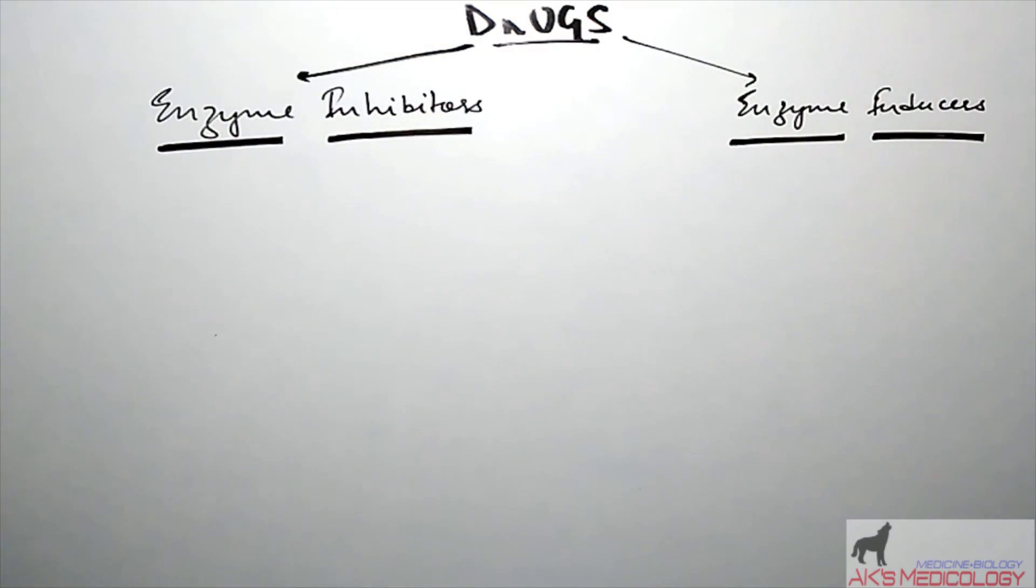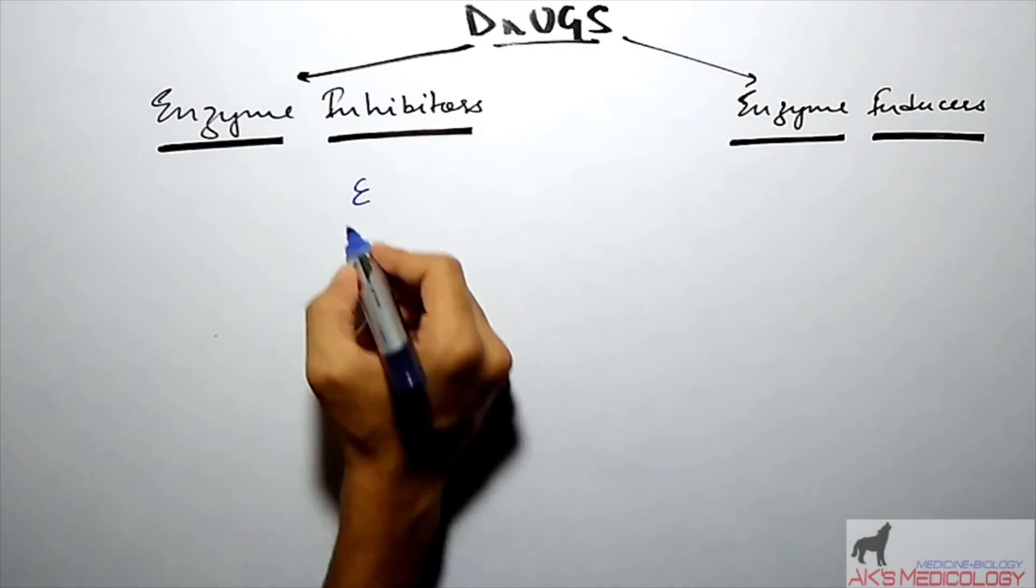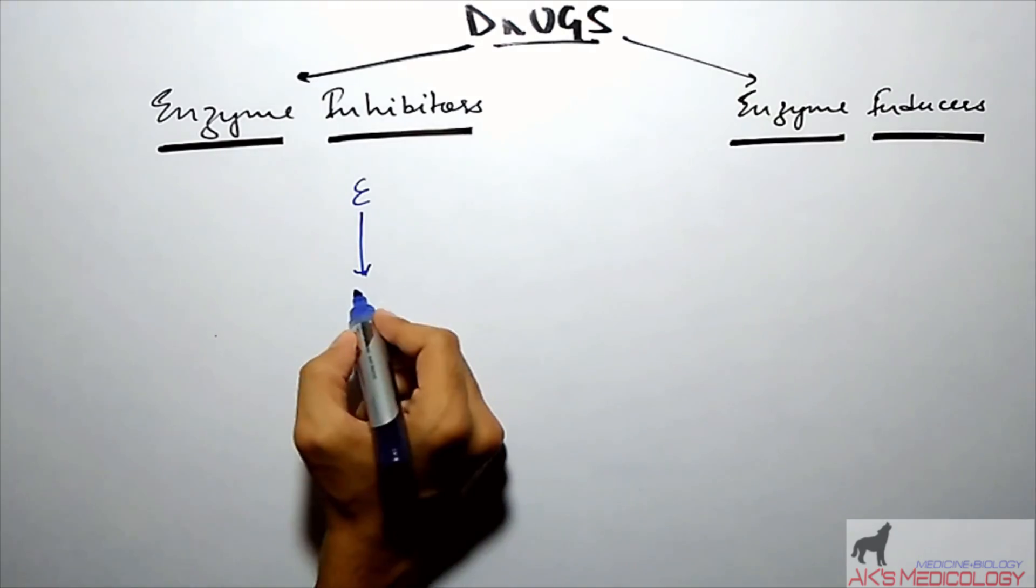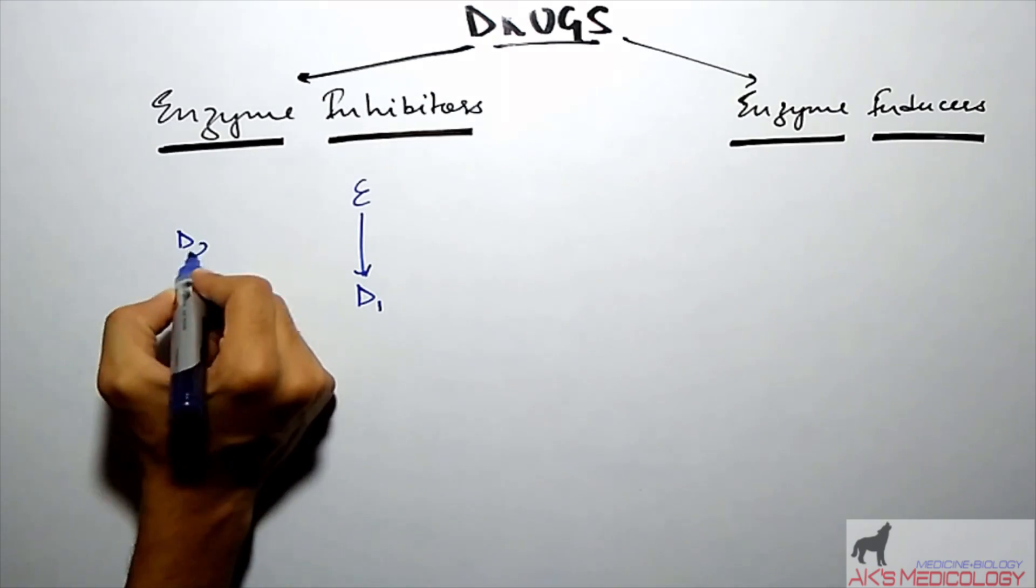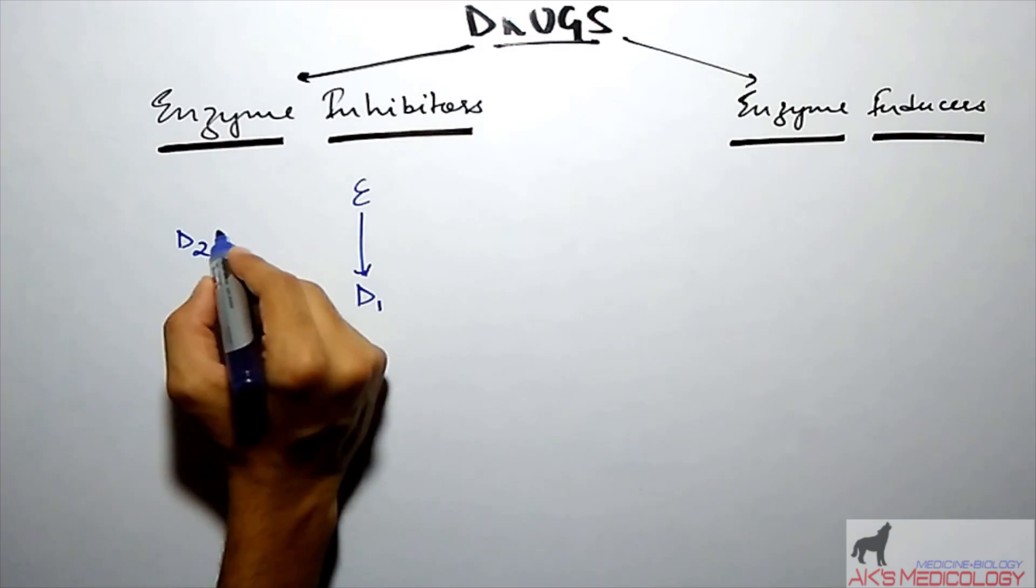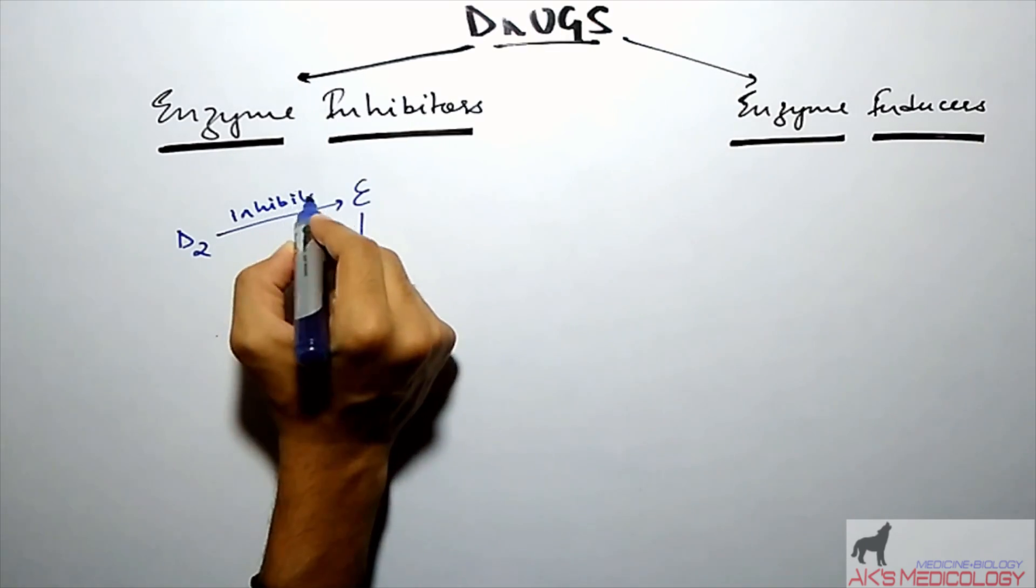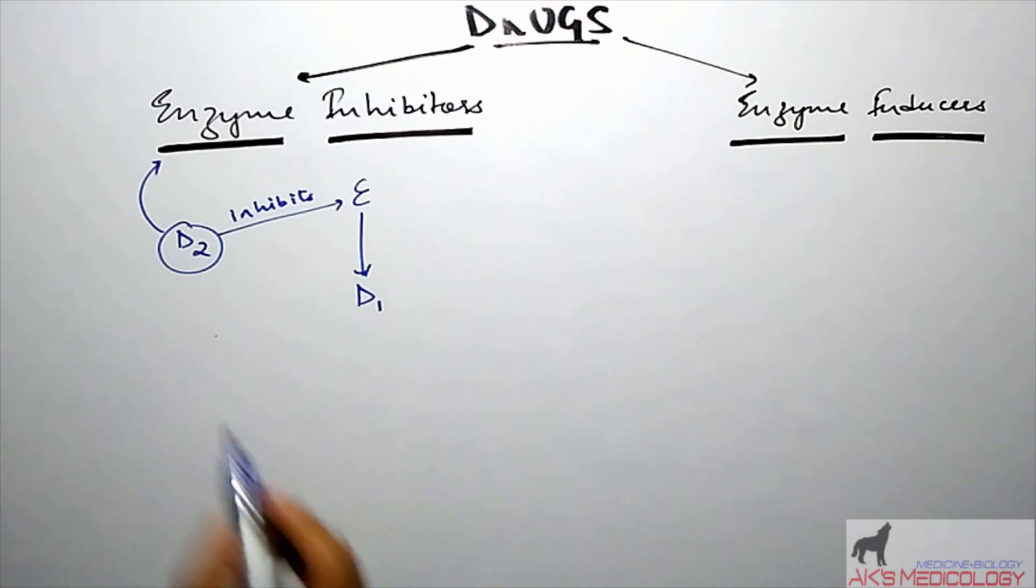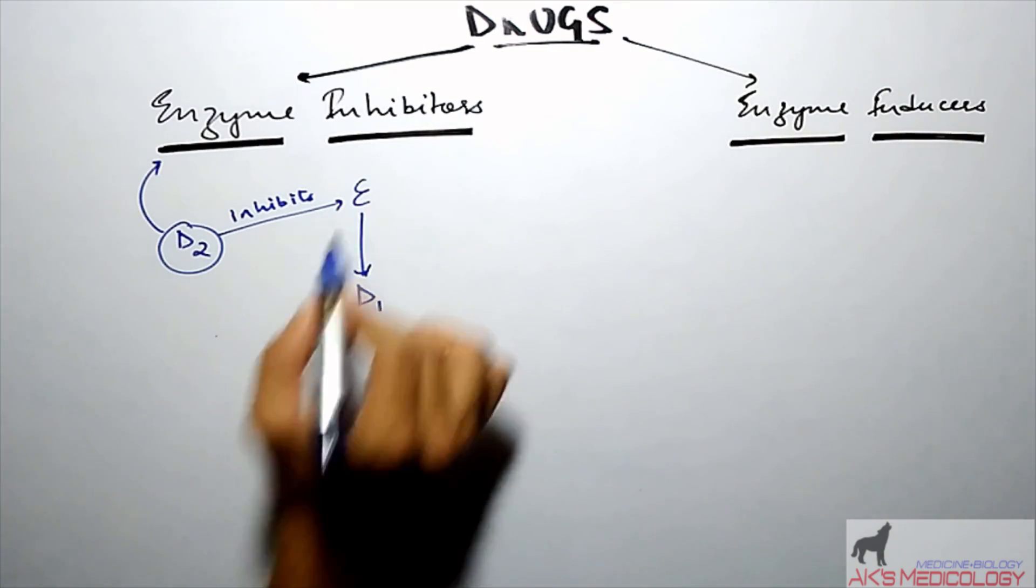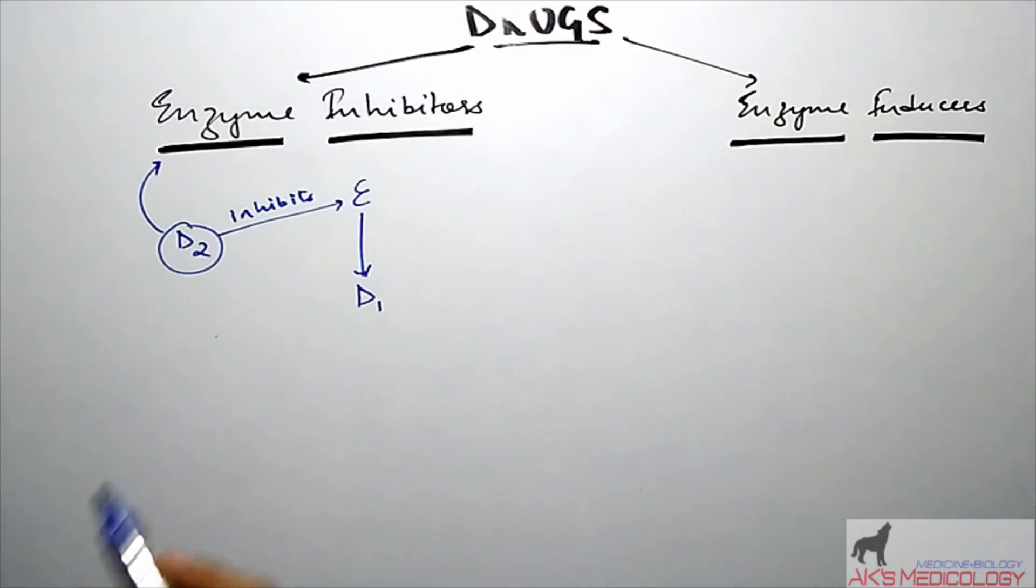Enzyme inhibitors are those drugs which inhibit the metabolizing enzymes. For example, let E be a metabolizing enzyme which metabolizes a drug D1, but we administer a drug to the patient, D2, which inhibits this enzyme. D2 is our enzyme inhibitor.